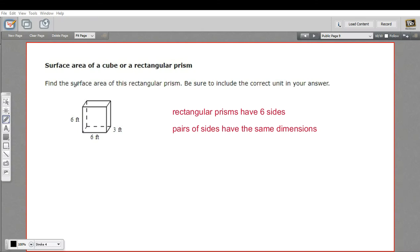In this problem, we're being asked to find the surface area of this rectangular prism. So we've got a rectangular prism that's 6 by 6 by 3 feet. What is the surface area of that?